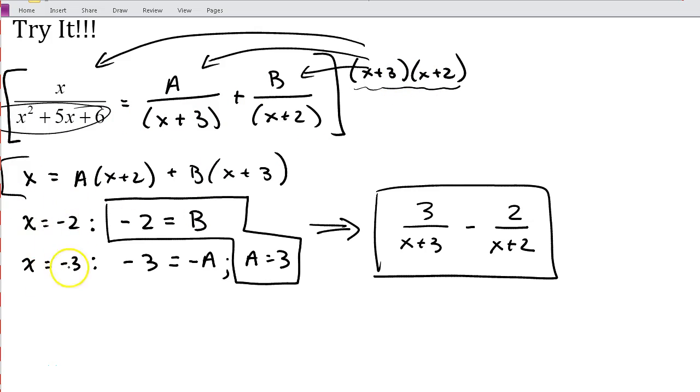And then picking our convenient values for x, we get that b is negative 2 and a is 3. And then our last step, we go ahead and substitute those back in. So if you had any trouble with this first example, make sure that you get some help.